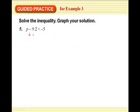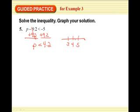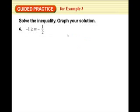And, this is that addition property that was in the key concept. To solve it, we're going to add 9.2 to both sides. Those cancel out. P is less than 4.2. And, then, you would graph it. 3, 4, 5. 4.2 is about right here. And, less than goes that way. And, it works.